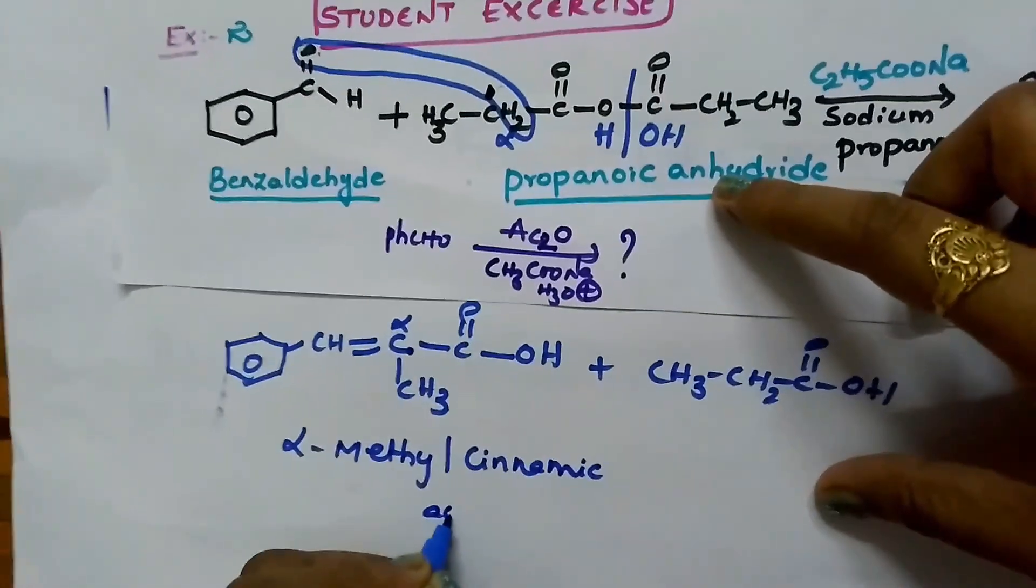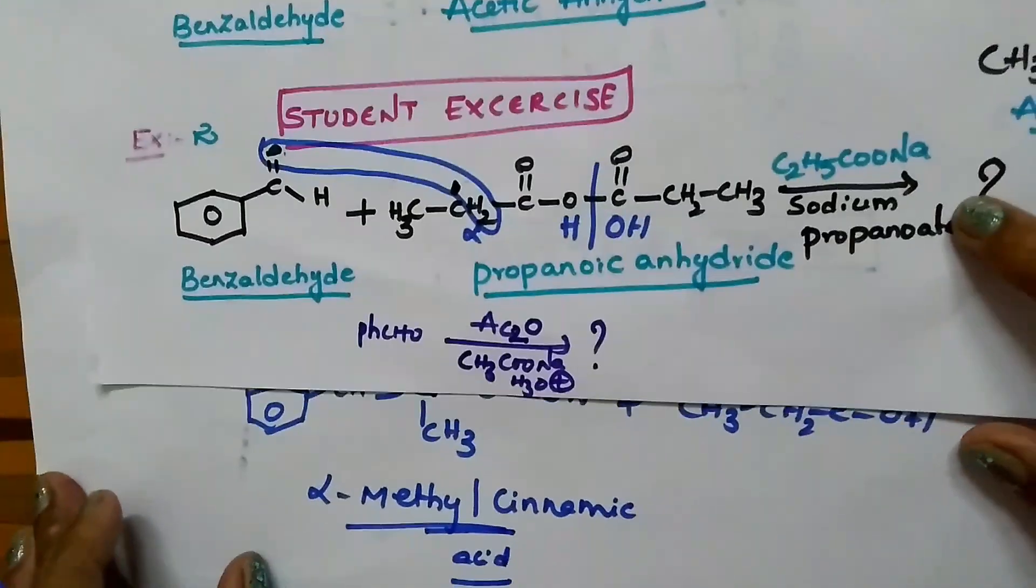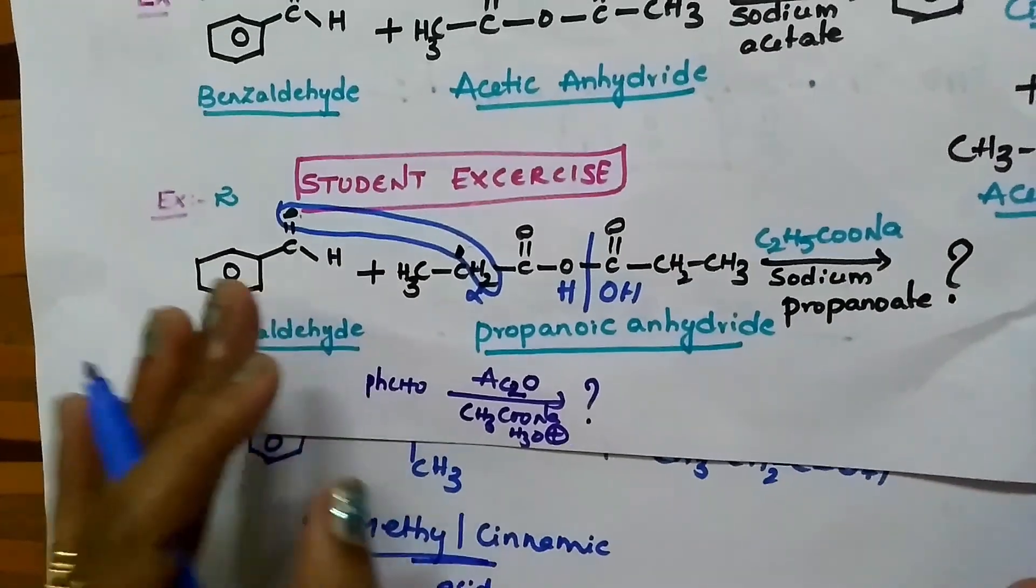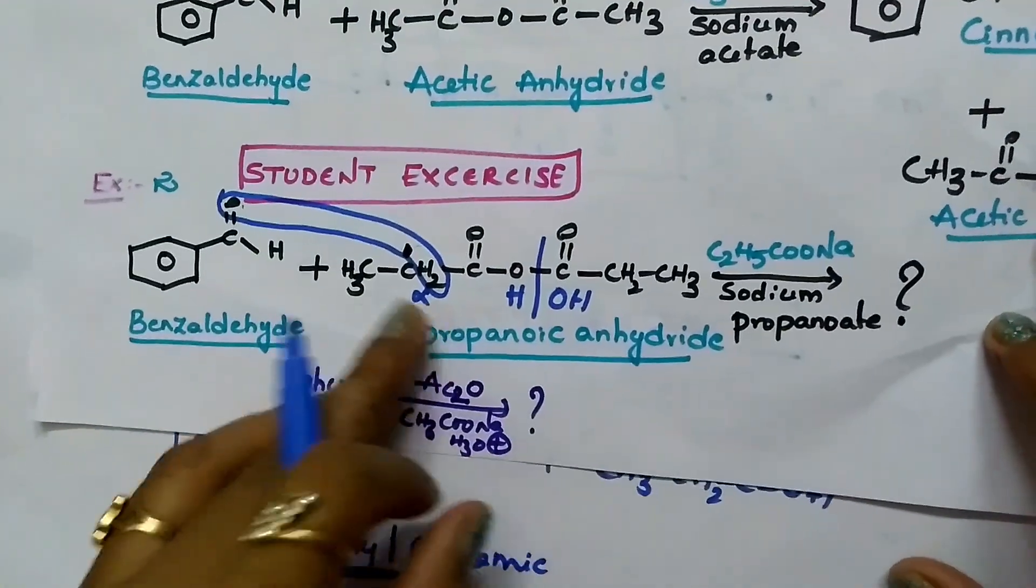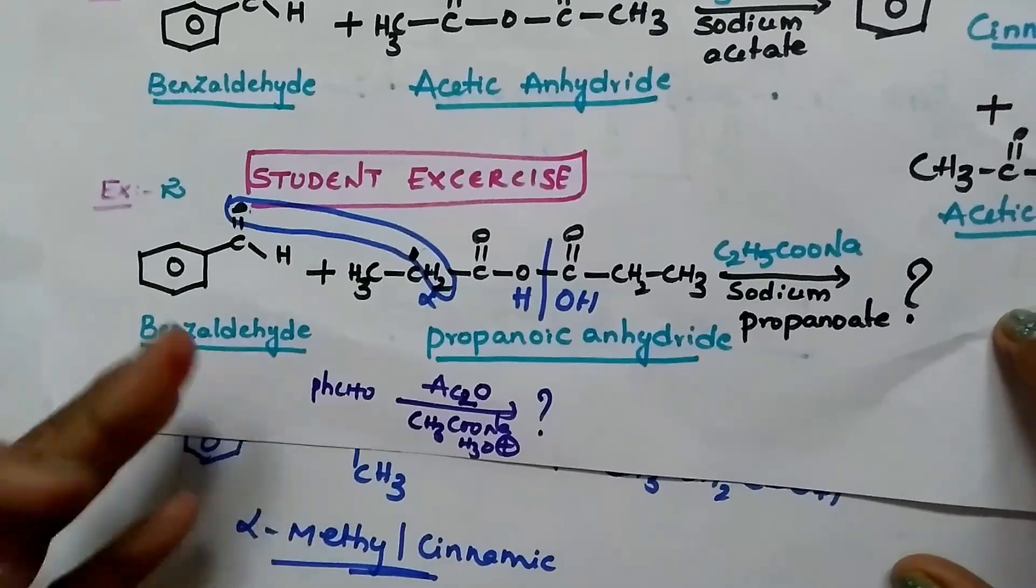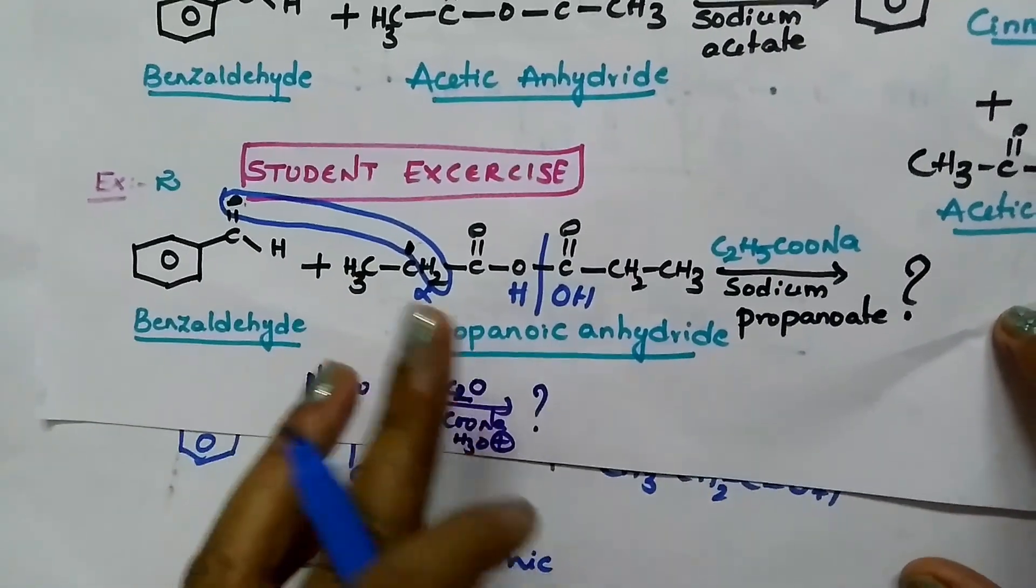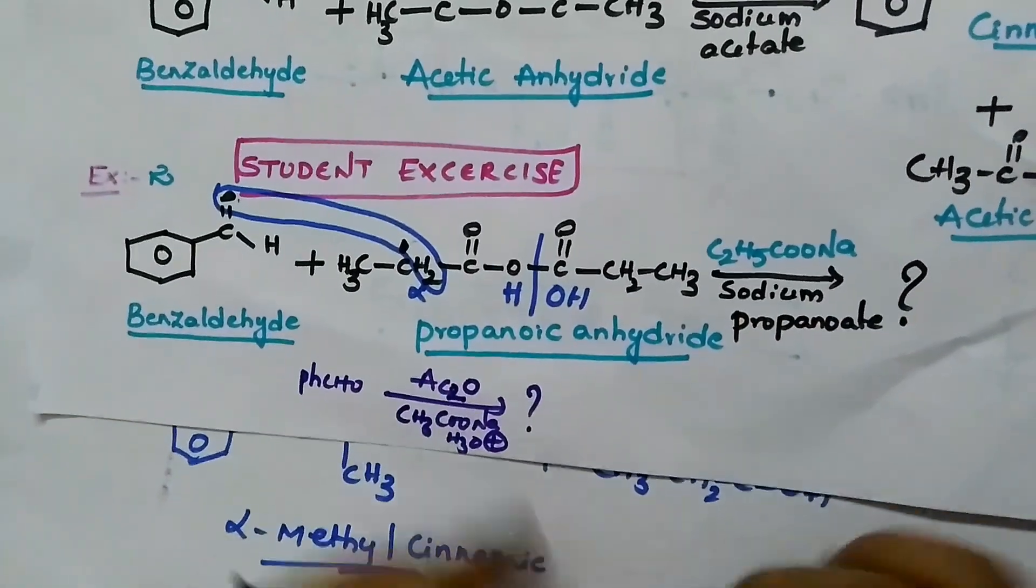Students, once again I am repeating the trick. Just remove two hydrogens from alpha carbon and one oxygen from the benzaldehyde - that is aromatic aldehydes - and add the same water molecule like this. Then you will get the product.